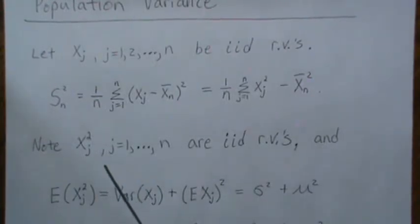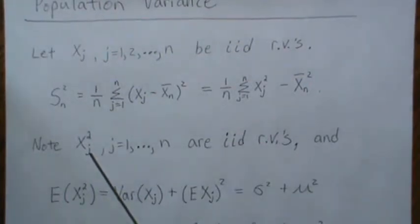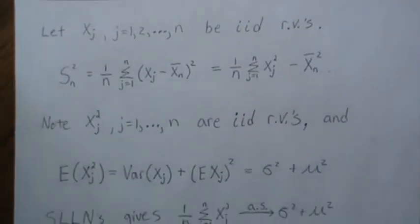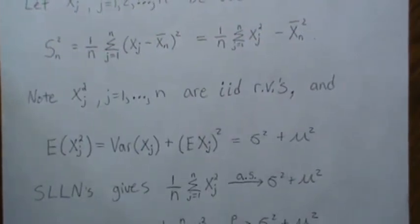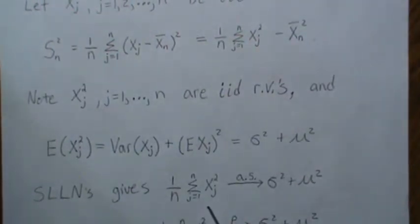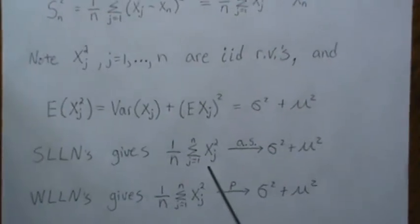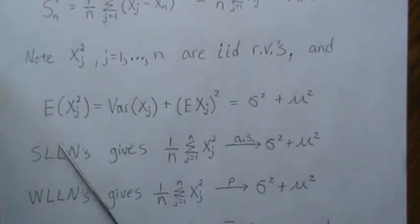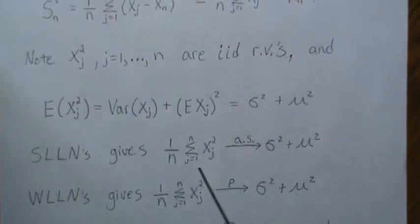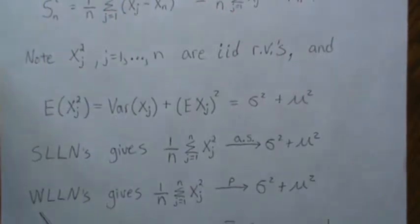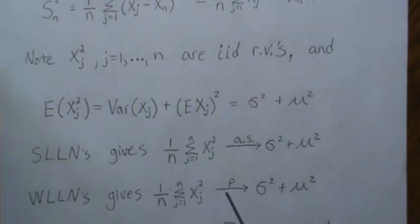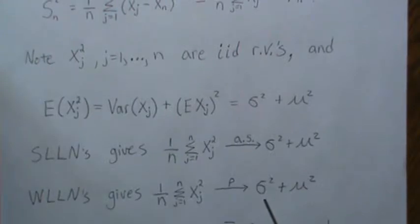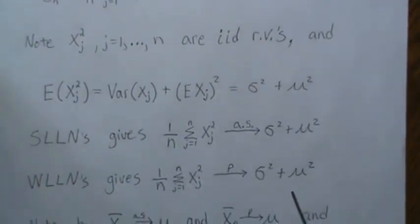Since XJ² is a random variable, we can apply the law of large numbers. The sample mean of XJ² converges almost surely to its expected value by the strong law of large numbers, which is σ² + μ². The weak law of large numbers says it also converges in probability to σ² + μ².